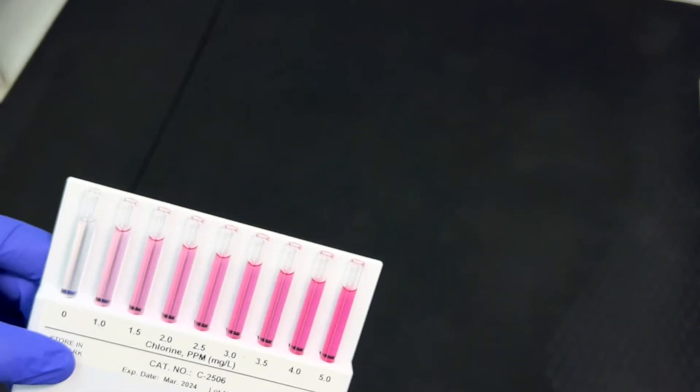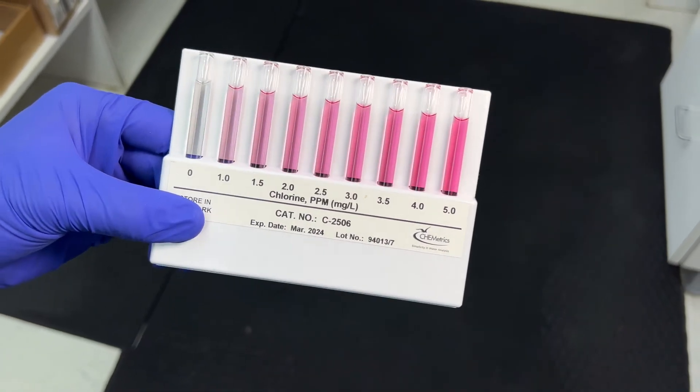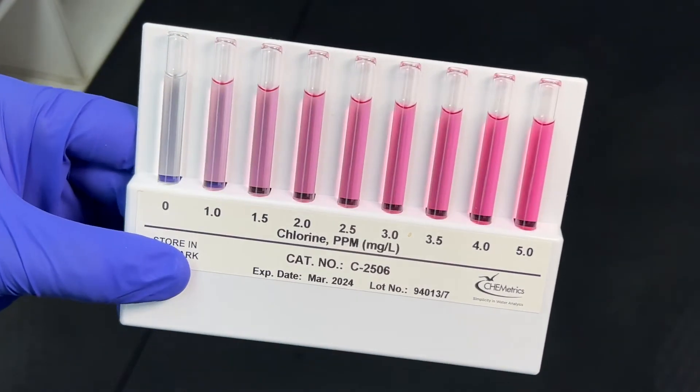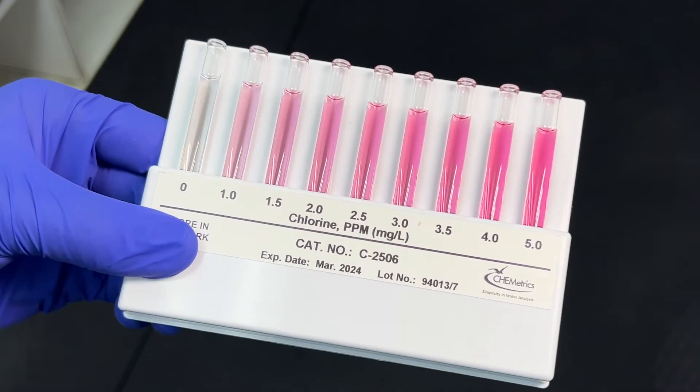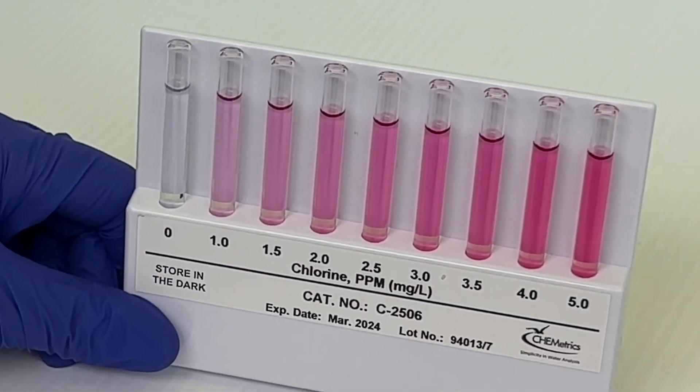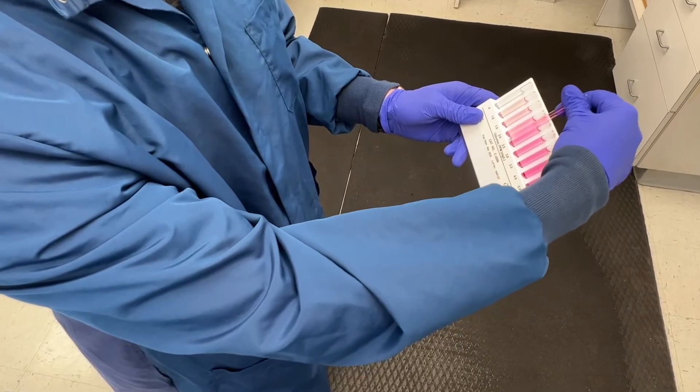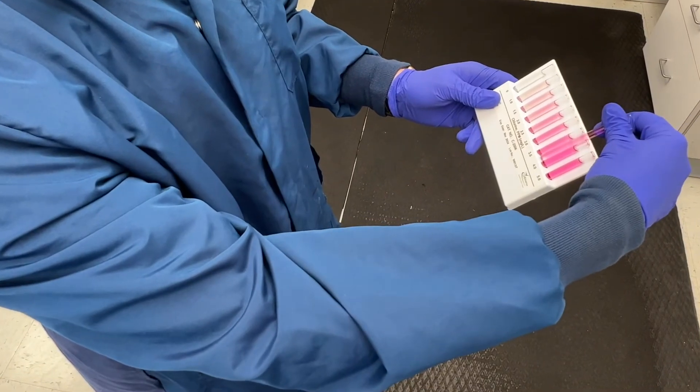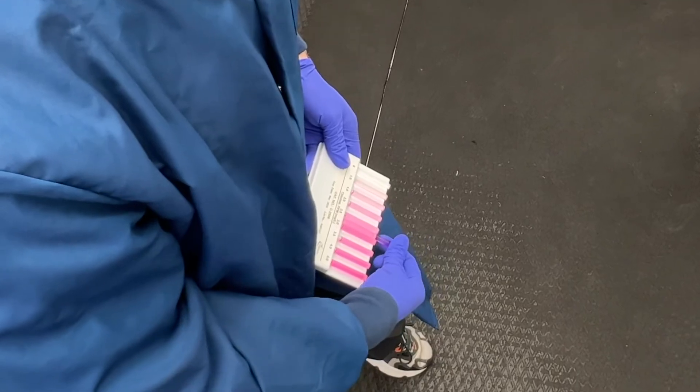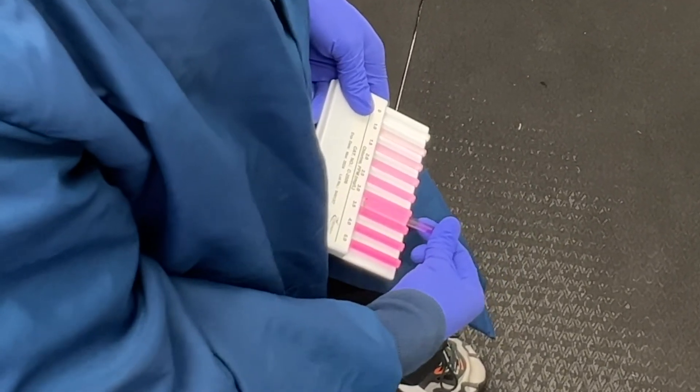When reading a high-range comparator, it's very important to hold it in a manner that eliminates glare or reflections from the light source. This can be accomplished by angling the comparator relative to the light source until the reflection disappears. Some analysts prefer to hold the comparator so the bubble is at the top of the ampoule. Others prefer to angle the top of the comparator down to make the bubble disappear into the body of the comparator, thus displaying longer stretches of continuous colors against which the test ampoule can be matched.